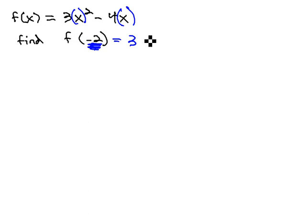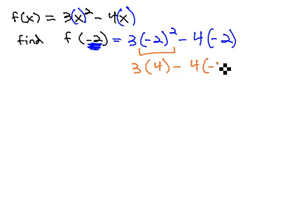We have 3 times x, which is replaced with -2 squared. As we make substitutions and replacements, always put them in parentheses. Minus 4x, which is replaced with -2. Now, we have an order of operations problem. We know we have to do the exponents first, so we have 3 times -2 squared is 4, minus 4 times -2.